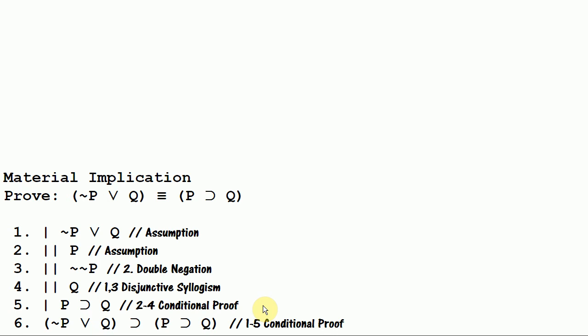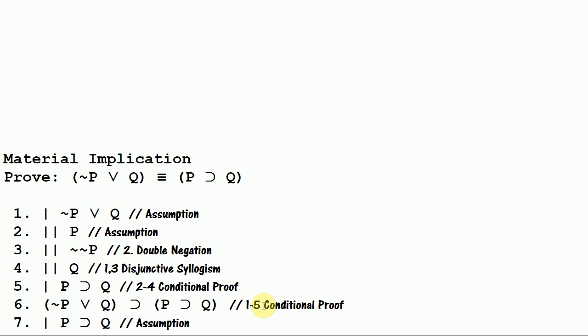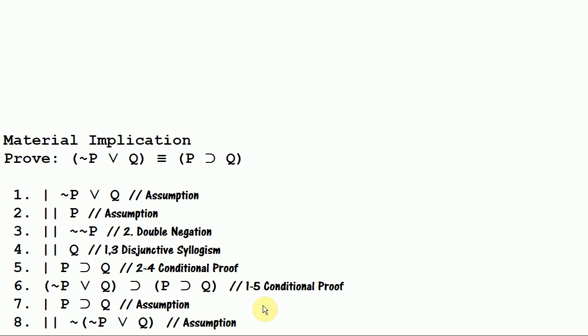And now we want to go in the other direction, where we'll assume if P then Q and try to prove not P or Q. Now I previously taught you in a previous video how to prove a disjunction through conditional proof. But that makes use of the rule of material implication, so we cannot use that method here to prove not P or Q. So what we're going to do instead is assume the negation of not P or Q and try to derive a contradiction. And if we can do that, that will demonstrate that not P or Q is true. So what can we do with this line? First of all we can use De Morgan's on this line.